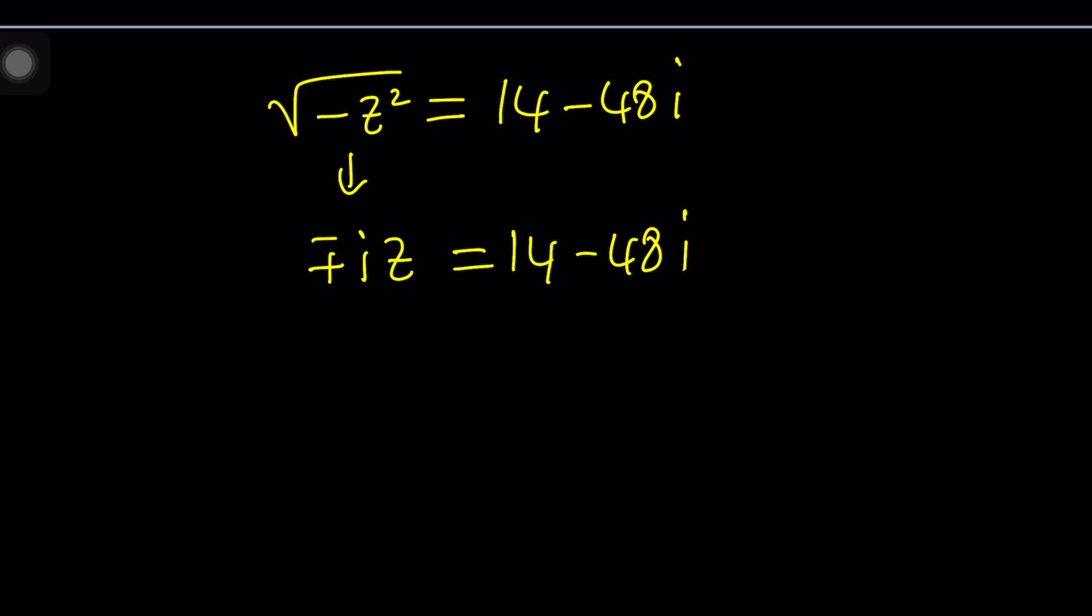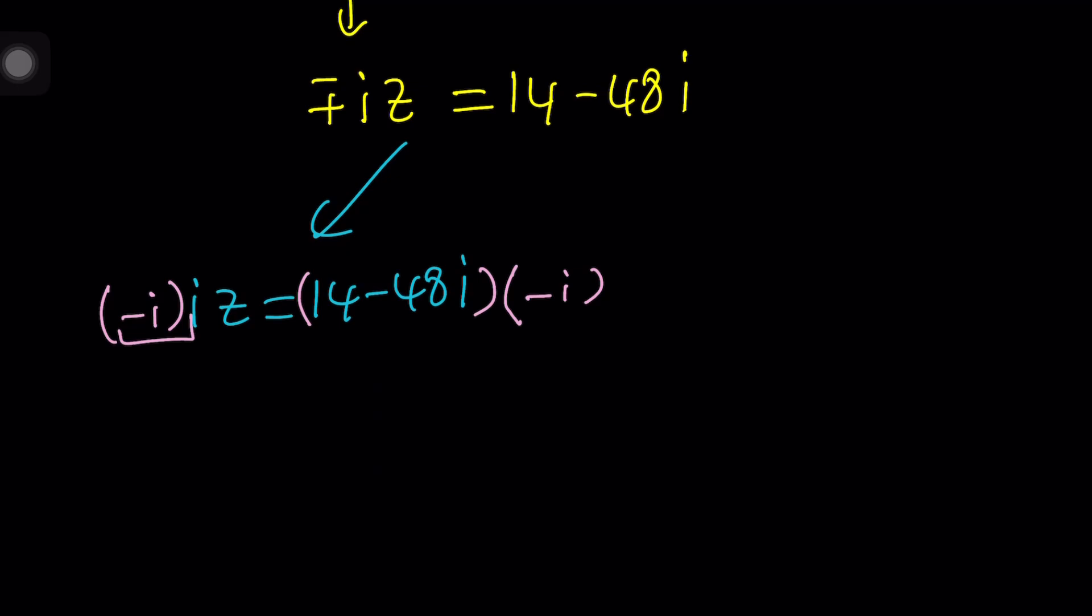Because when you square iz, you get i squared z squared, which is negative z squared. So, yes, negative z squared can be written like that. So its square root can be written as iz. But not only iz, it could also be negative iz. Because if you square negative iz, you get the same thing. So this could be written as plus minus iz and now it's equal to this. We need to split this into two solutions. iz equals 14 minus 48i. In this case, a lot of times people are going to divide by i. You could do it, no big deal. Or you can multiply by negative i, which is something that I like better, because i times negative i is 1. So this is 1, and on the right-hand side we get the following: 14i, negative 14i, and then this becomes 48i squared, which is a negative 48. Negative 48 minus 14i is one of the solutions.